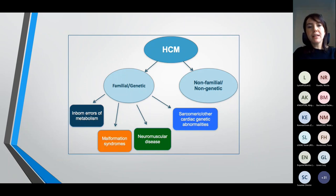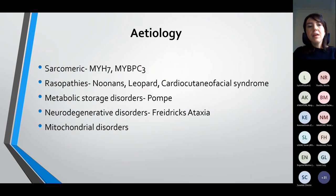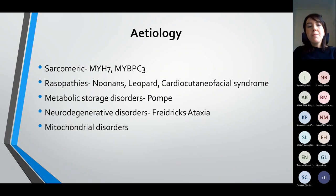In paediatric hypertrophic cardiomyopathy, the etiology is widespread — we can have inborn errors of metabolism, malformation syndromes, neuromuscular disorders, and sarcomeric and other cardiac genetic abnormalities. In the sarcomeric patients we tend to see the majority with MYH7 and MYBPC3 mutations. We have a large cohort grouped as the RASopathies — patients with gene mutations in the RAS pathway including Noonan syndrome, Leopard syndrome, and Cardiofaciocutaneous syndrome. Metabolic storage disorders like Pompe's disease, neurodegenerative disorders like Friedreich's ataxia, and multiple mitochondrial disorders all have hypertrophic cardiomyopathy as part of their phenotype.